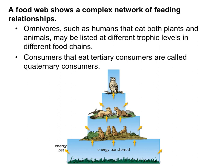Omnivores such as humans, which eat both plants and animals, may be listed at different trophic levels in different food chains. When you eat a salad, you are a primary consumer because you are eating a producer; but if you have chicken on that salad, you would be a secondary consumer because you are eating a primary consumer. Consumers that eat tertiary consumers are called quaternary consumers, which happens especially in aquatic food webs.